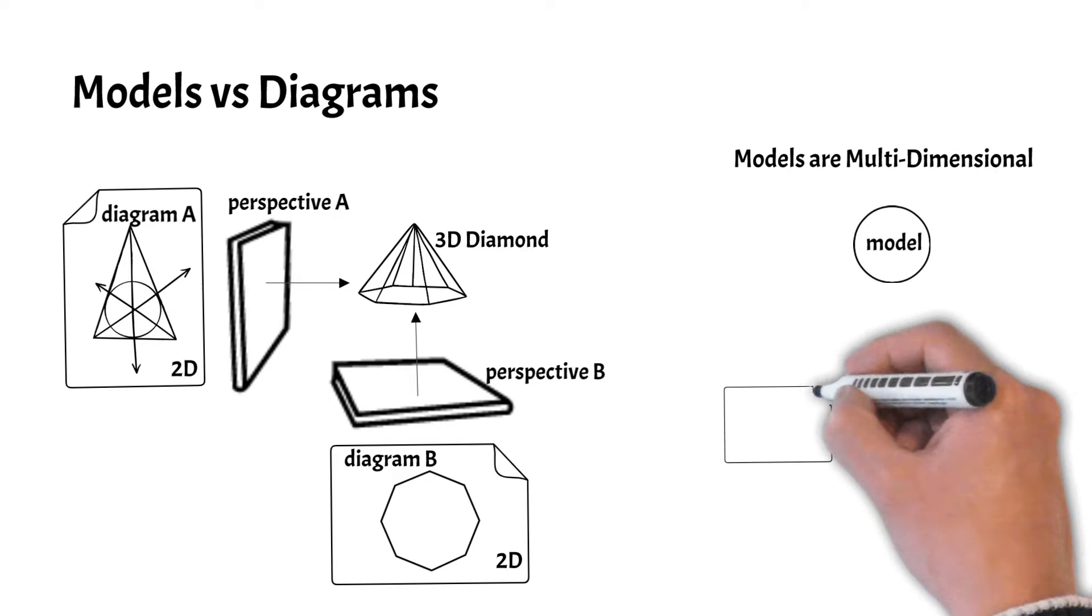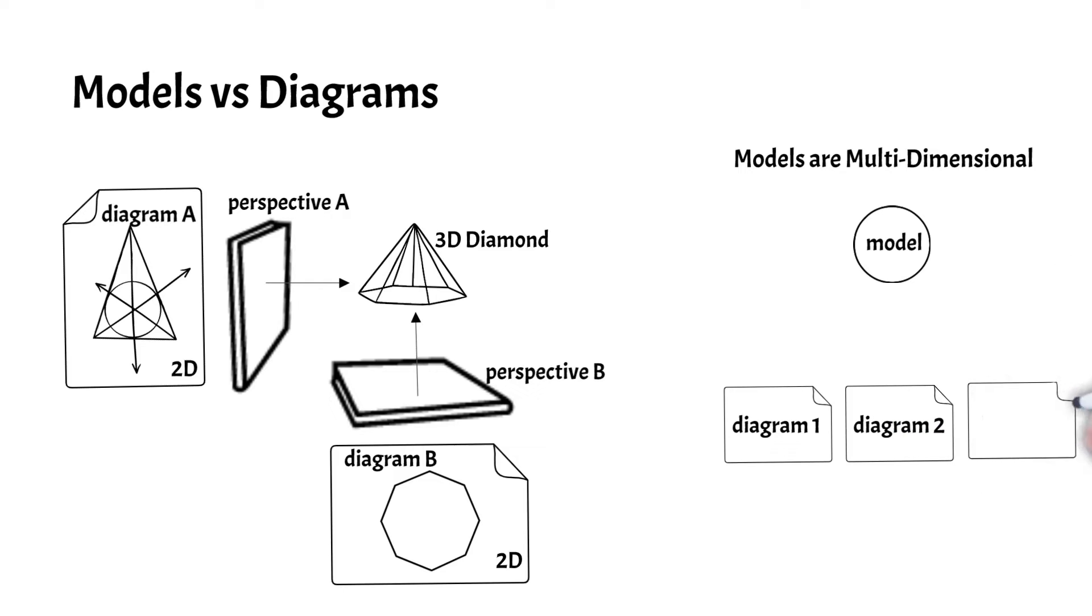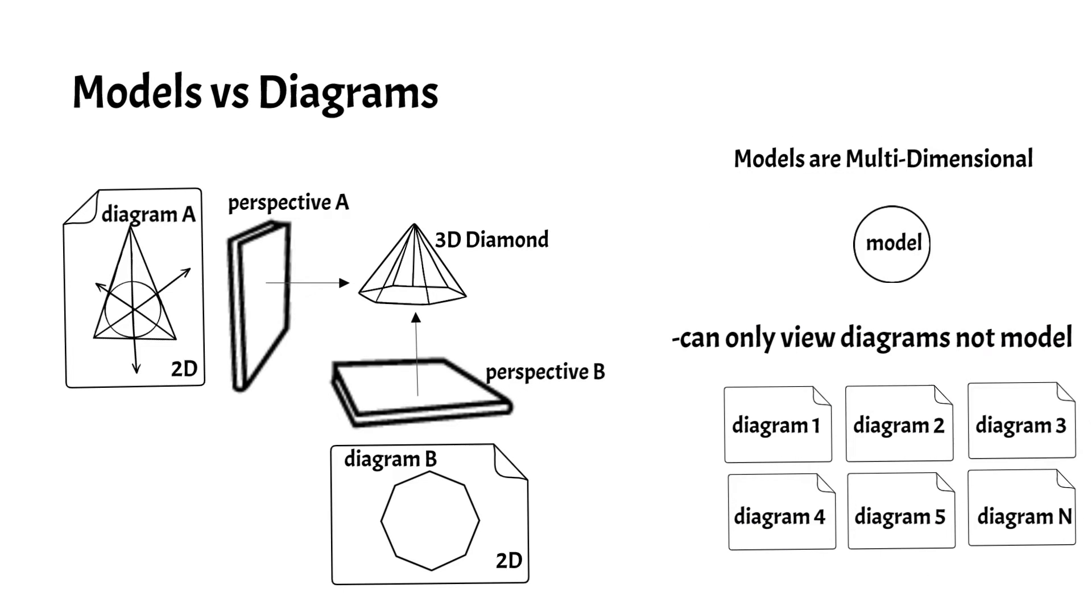Unlike the diamond, the system model is more than three dimensions. Therefore, we cannot actually see the model. We can only view the diagrams. The aggregation of the diagrams will allow the engineers to understand the highly complex multidimensional model.